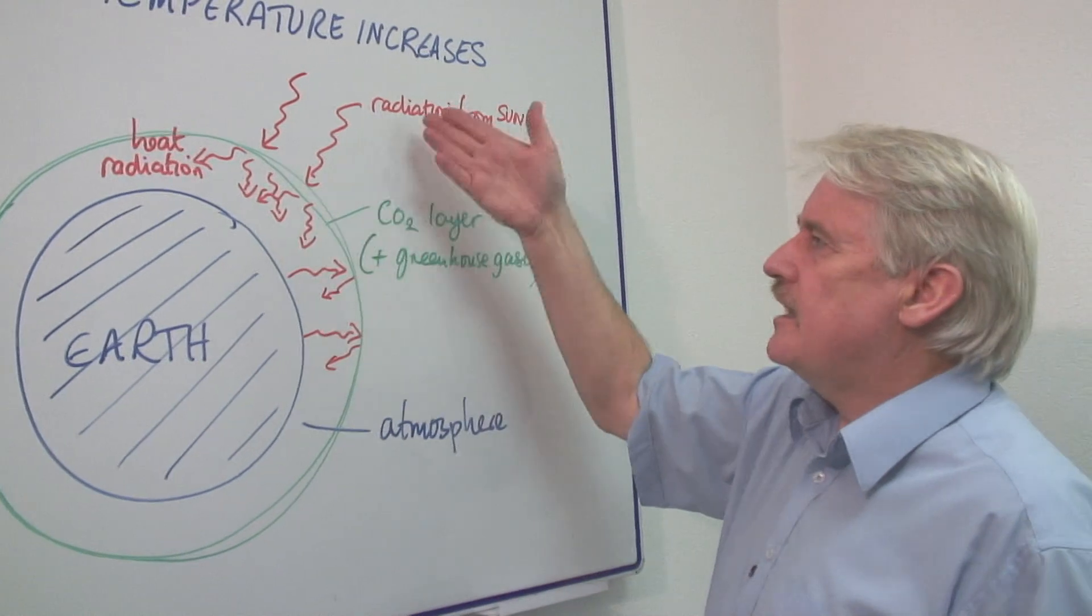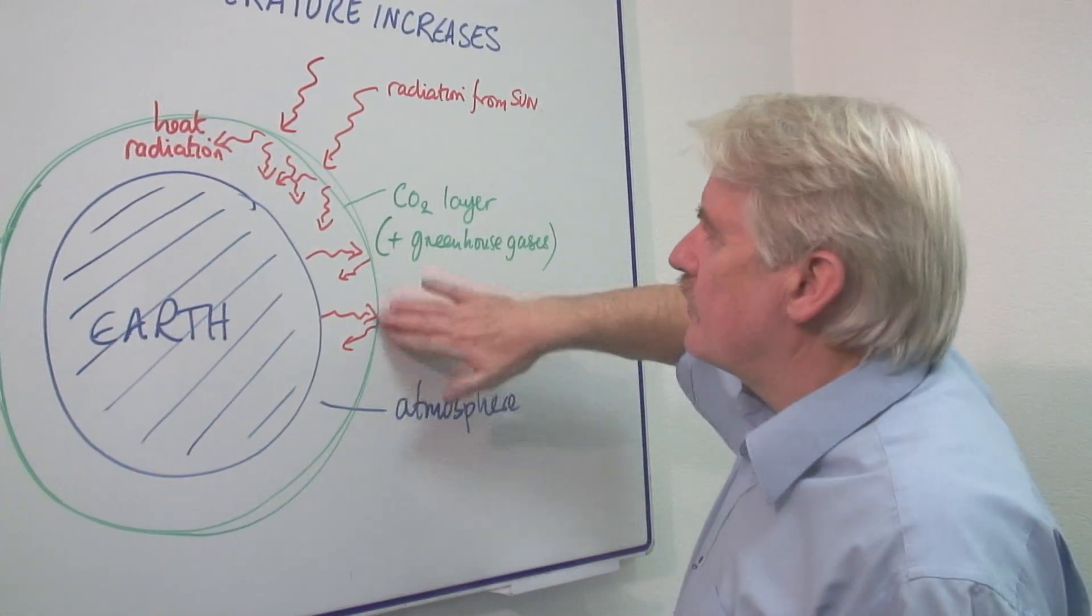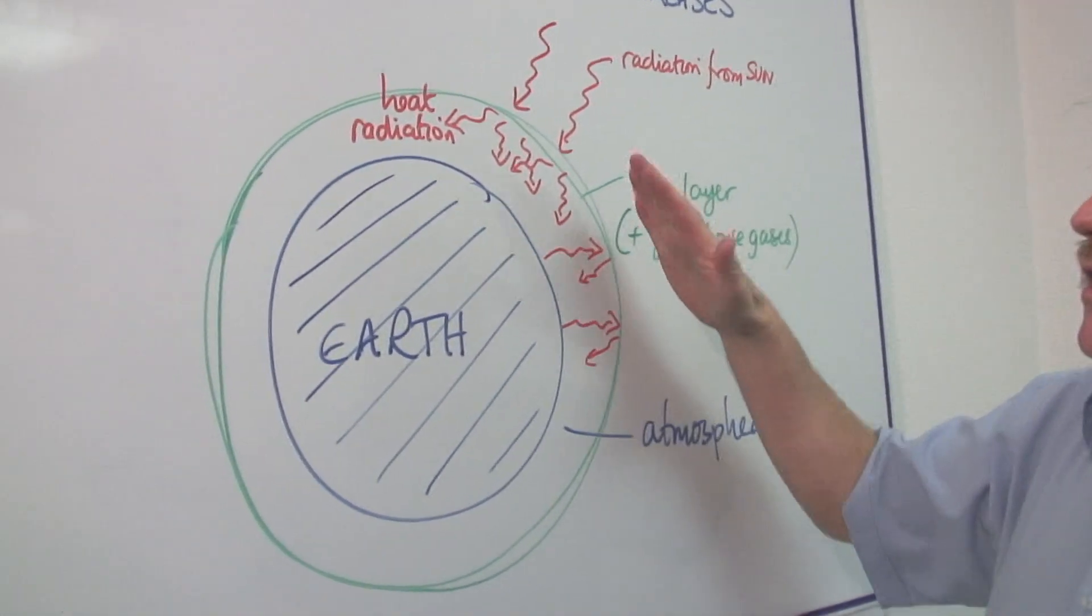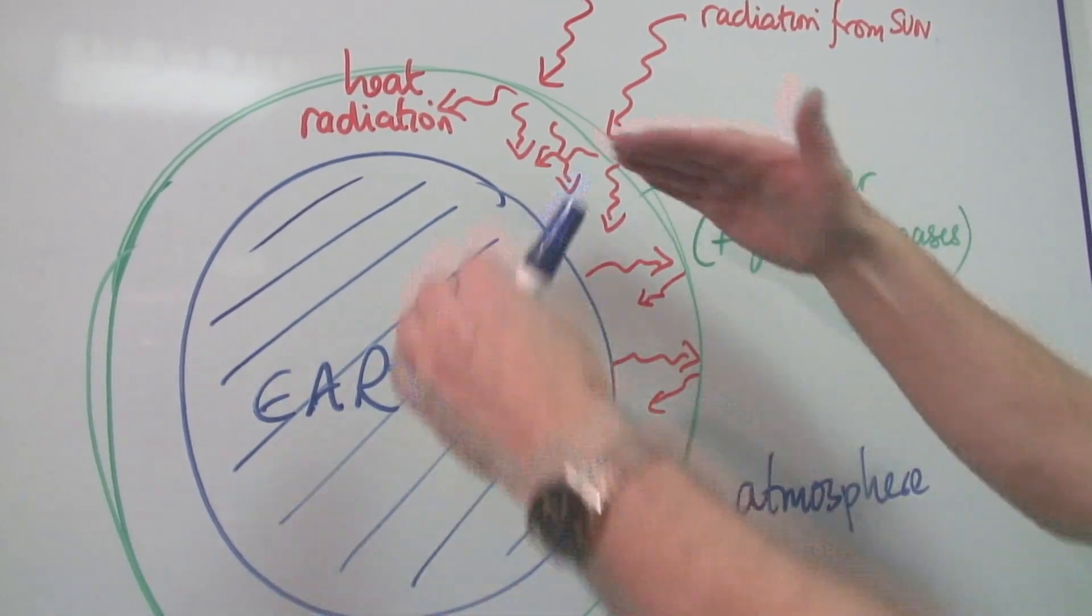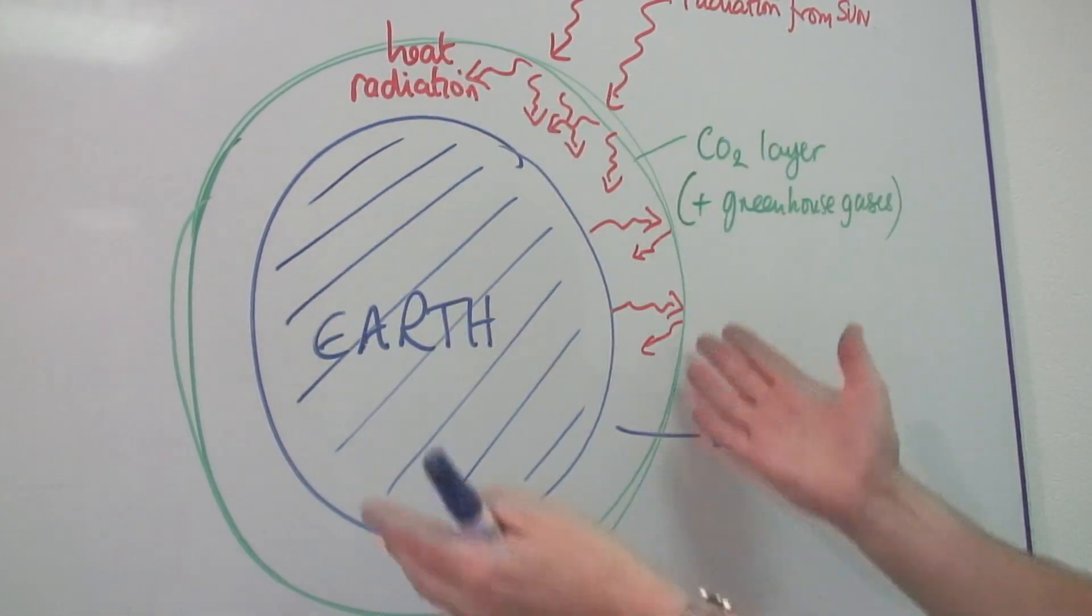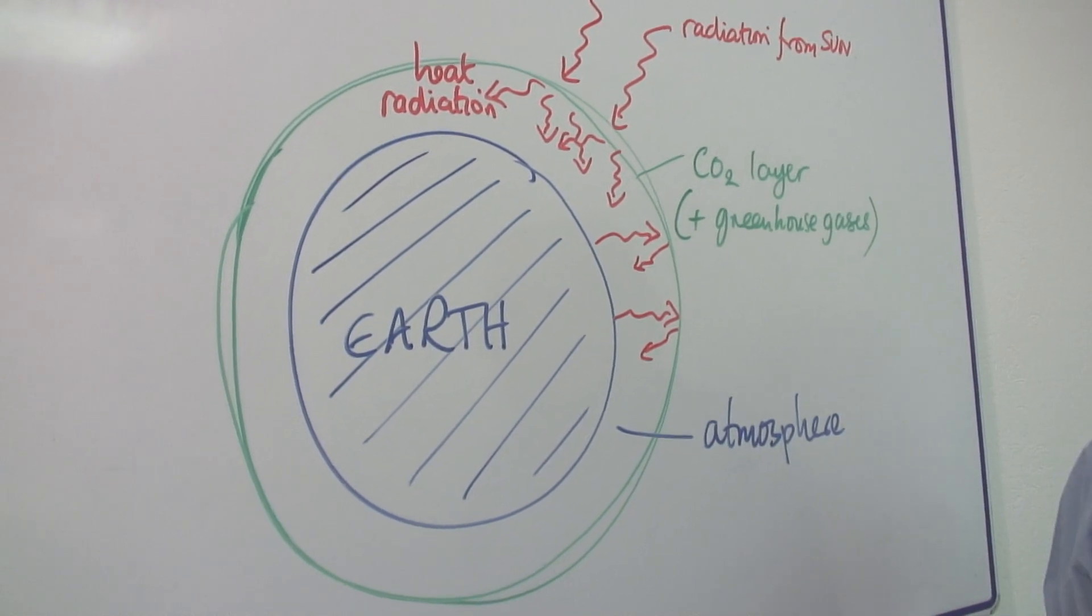Normally, radiation could escape from the Earth. But this band of carbon dioxide and other greenhouse gases like methane are causing that energy to be absorbed within the atmosphere and to be retained within the atmosphere. So overall, the atmosphere is getting warmer.